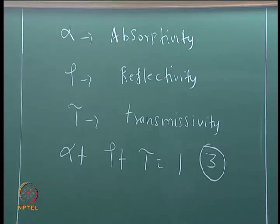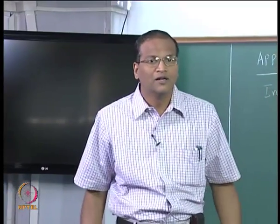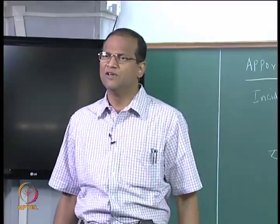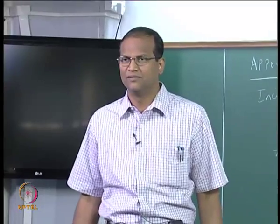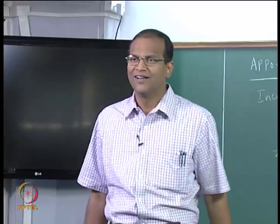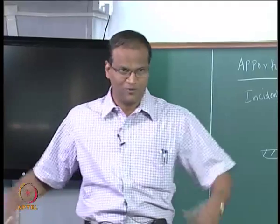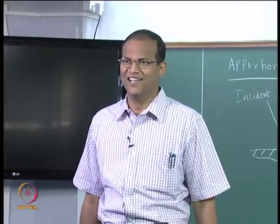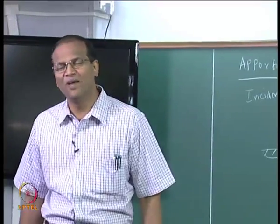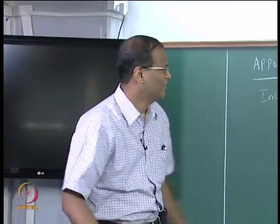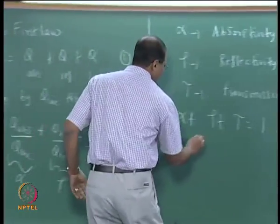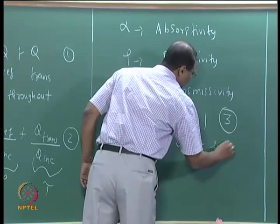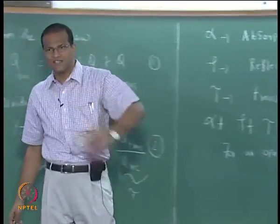What is tau for an opaque surface like a human being or a wooden surface? For an opaque surface, tau = 0. Note that if you pass X-rays, X-rays can come through us — we are able to take pictures of bones — so opacity depends on the wavelength. For an opaque surface in the relevant spectrum, tau equals zero.